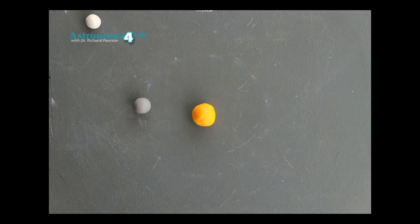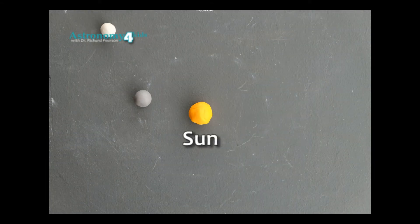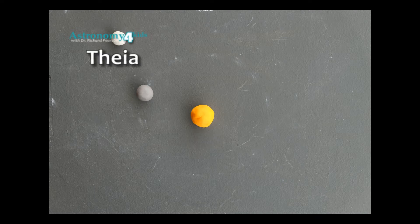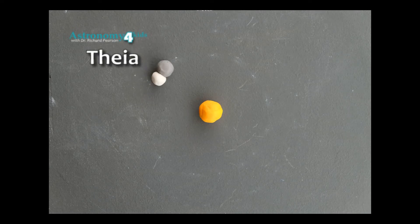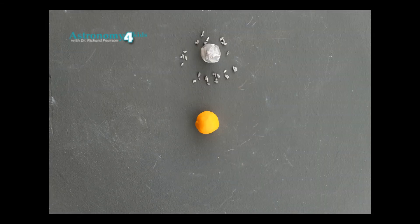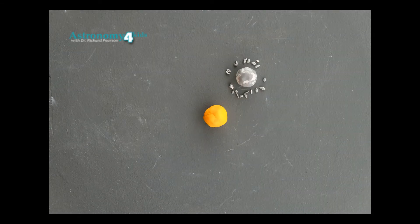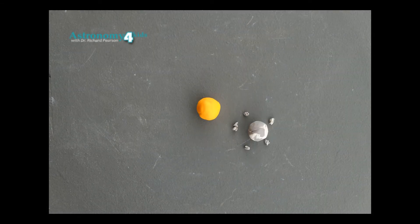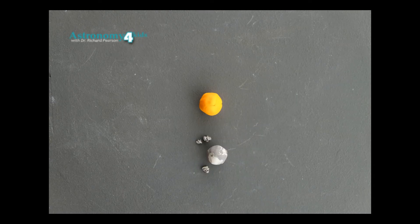I put together a short clip to illustrate this. Here's our Sun and here's our Earth, billions of years before it looked like it does today. An object which has been called Theia collided with, or slammed into, the Earth. All the debris or wreckage from the collision collected around the Earth and became the moon.